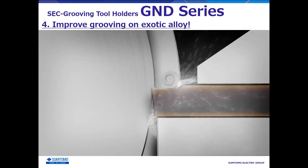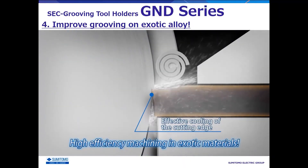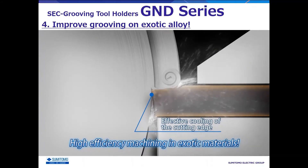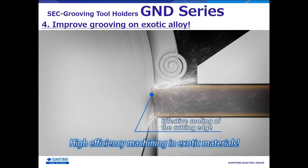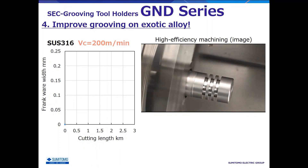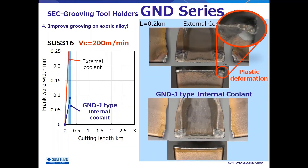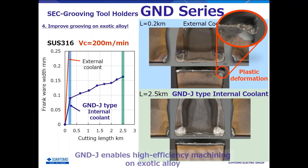GND-J type has another advantage. Since direct coolant has an outstanding cooling effect, GND-J type enables high-efficiency machining in stainless steel and heat-resistant alloys, where the temperature of the cutting edge tends to rise. This is 316 stainless steel being grooved at a cutting speed of 200m per minute, which is twice the typical machining conditions. External coolant causes remarkable flank wear and plastic deformation at the cutting edge due to high cutting edge temperature. On the other hand, using GND-J type can greatly suppress flank wear, enabling both high-efficiency machining and long tool life.